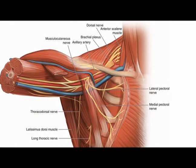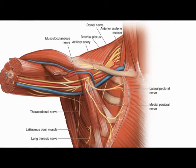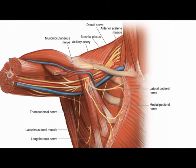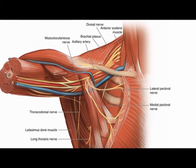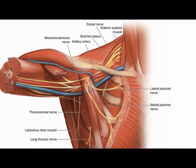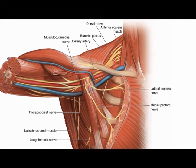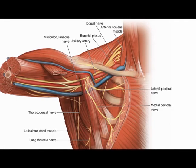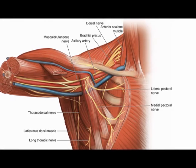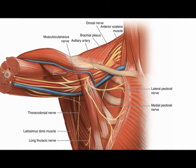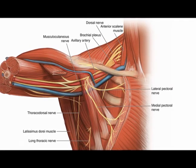The innervations of the pectoralis major muscle include, for the clavicular head, the lateral pectoral nerve from vertebral levels C5, C6, and C7.